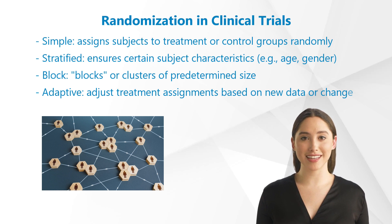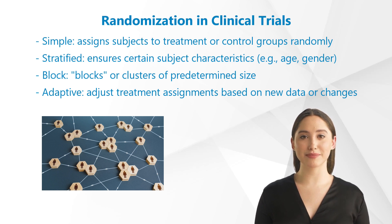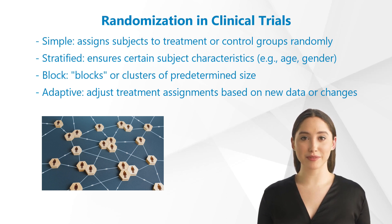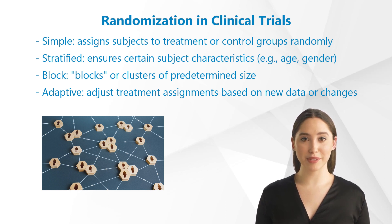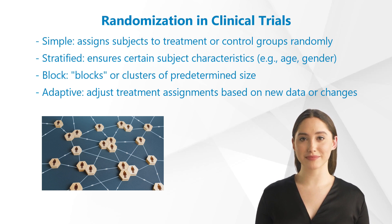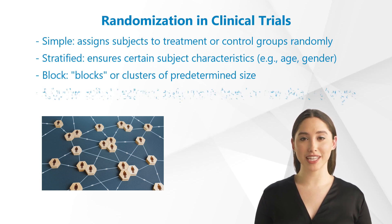Simple randomization assigns subjects to treatment or control groups randomly and without any predetermined order or structure. Stratified randomization is used when researchers want to ensure that certain subject characteristics, such as age and gender, are equally represented in both groups. Block randomization assigns subjects to treatment or control groups in blocks or clusters of predetermined size. Adaptive randomization is used when researchers want to adjust treatment assignments based on new data or changes in the study design.